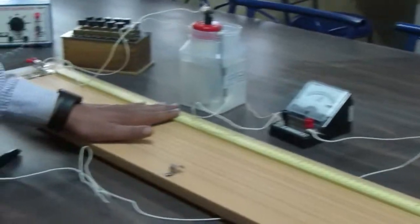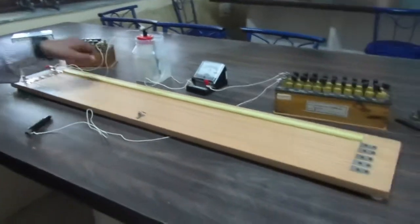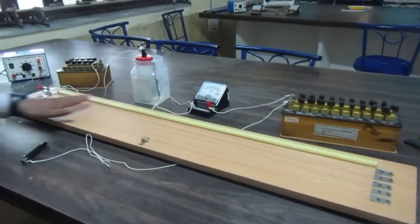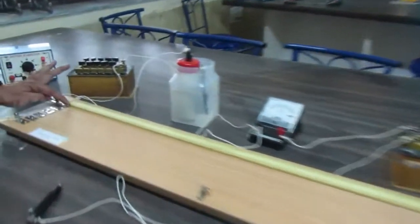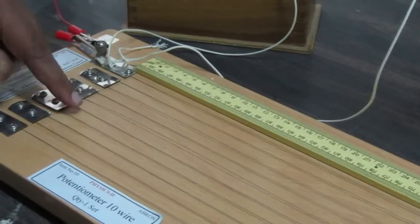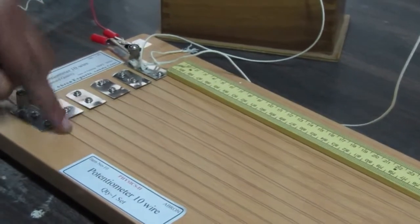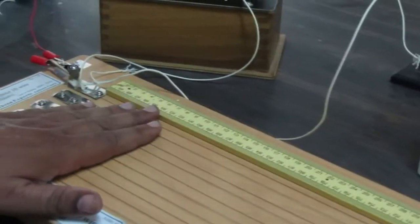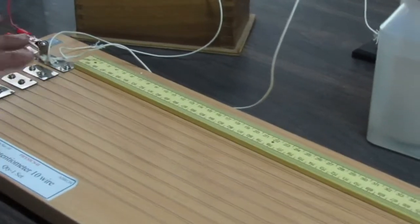This is our device known as potentiometer. It has 1, 2, 3, 4, 5, 6, 7, 8, 9, 10 wires - one meter is 10 wires. Each wire is 1 meter, so the total length is 10 meters. This is a 1 meter scale.